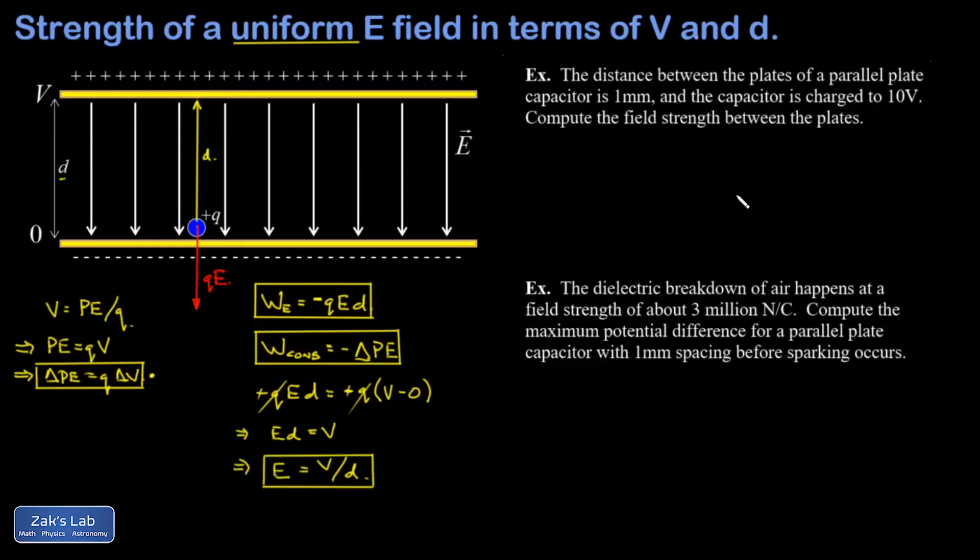Before we get into the examples, let's talk about units. This formula implies that the units of E are volts per meter, but we started with newtons per coulomb. How do we square this? The key is remembering that a volt is a joule per coulomb, so we have joules per coulomb times one over meters. Recalling that a joule is a newton meter, the meters cancel out, giving us newtons per coulomb for the electric field strength.